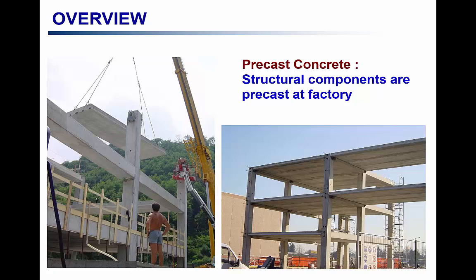Construction is also much faster because we only need to assemble the elements at the construction site. However, one limitation of precast concrete structures is that the elements must be transported to the site, which limits the size of elements that can be transported. It also requires more advanced techniques to assemble the elements at the site.